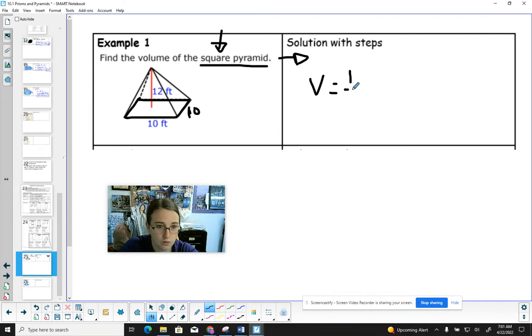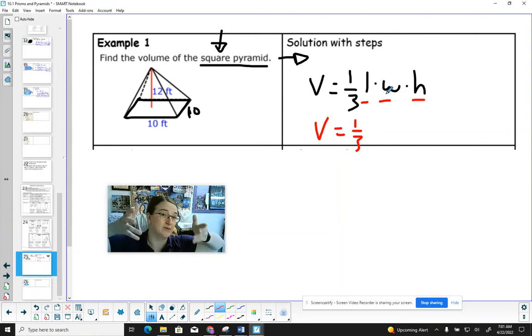We got volume equals 1/3 length times the width times the height. So we need to have three numbers, right? We need the length, the width, and the height. So the length and the width, this always referred to, just switching colors here, length and width is the area of the base, right?